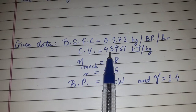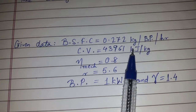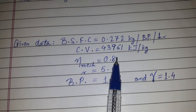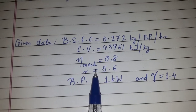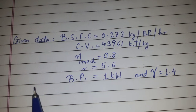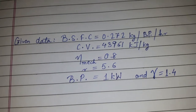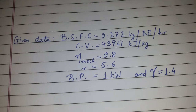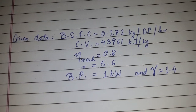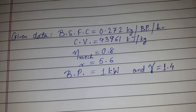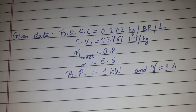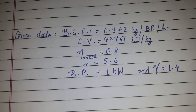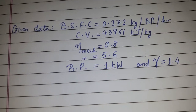So to summarize the given information: BSFC is equal to 0.272 kg per BP per hour, CV is given as 43961 kJ per kg, mechanical efficiency is 0.8, and compression ratio r is 5.6. The brake power is not directly given, but since BSFC is expressed per kilowatt of brake power, we will take BP equal to 1 kilowatt.